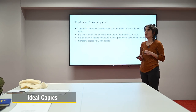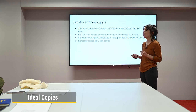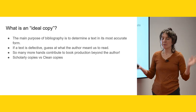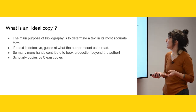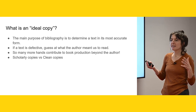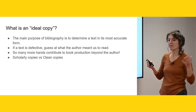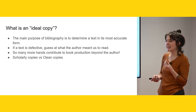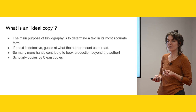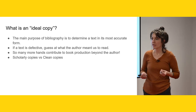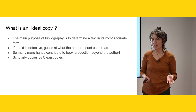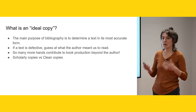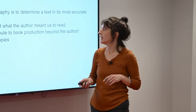First I wanted to talk briefly about the concept of an ideal copy. I don't know how many of you are familiar with this idea, but it is a pretty strict way of conceiving of and describing a book. The aim of finding and describing an ideal copy is to get at what the author's intention was when creating this book. I'd like to problematize this idea a little bit, because when you're describing materiality that's not necessarily our goal here.